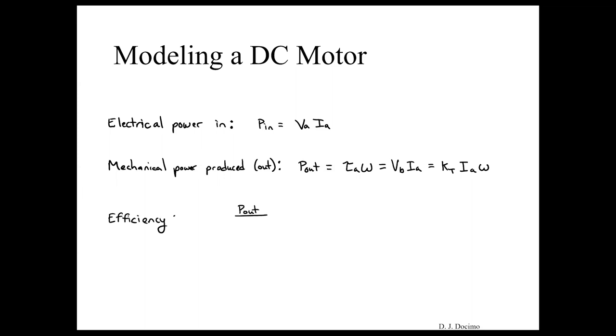And so we can get an efficiency for this, which would be eta, which is equal to P out over P in. That is the same thing as KT IA times omega divided by VA IA. Or in other words, KT times omega divided by VA. That's the efficiency for your motor at any given time.